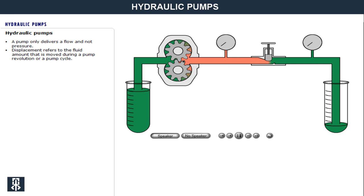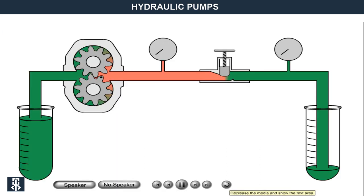As a general rule, a pump only delivers a flow and not any pressure. Pressure is caused by resistance against the pump's flow. If the flow only encounters slight resistance, the pressure becomes low. One can say that pressure is a by-product of the flow, or a measurement of how much work the flow can do.